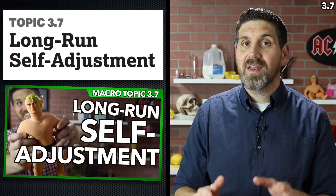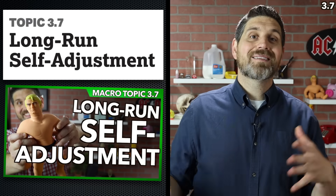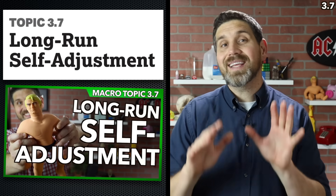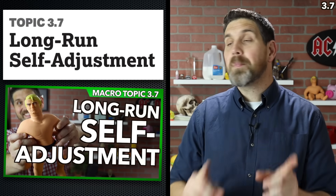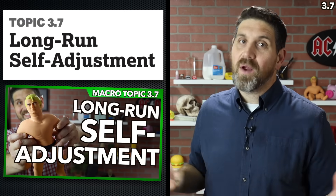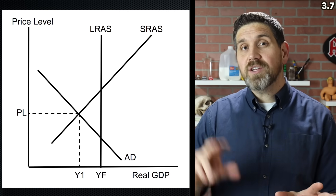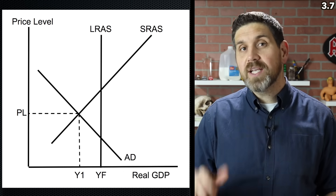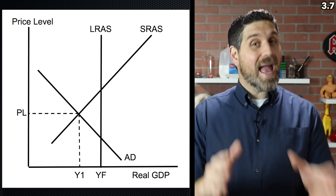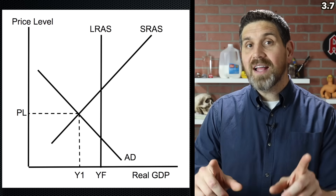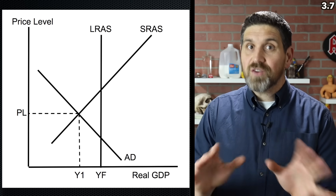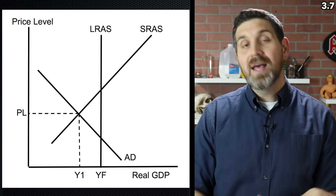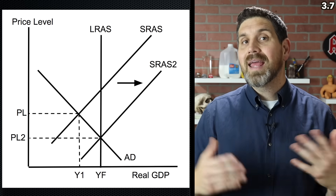Now we're moving on to topic 3.7 — the idea that the economy self-adjusts. Pause the video and answer questions one, two, and three under topic 3.7. When talking about long-run adjustments, it is not demand that's changing — it's the short-run aggregate supply, because wages and resource prices adjust. When we have a negative output gap and unemployment is really high, eventually in the long run, if wages are flexible, wages will go down, resource prices will go down, and short-run aggregate supply will shift to the right, putting us back at full employment.